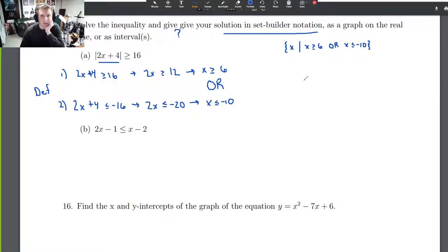How about in interval notation? I'm going to translate these in reverse order here. So x is less than or equal to -10 is negative infinity to -10 inclusive, union with 6 to infinity. That's the interval notation solution.